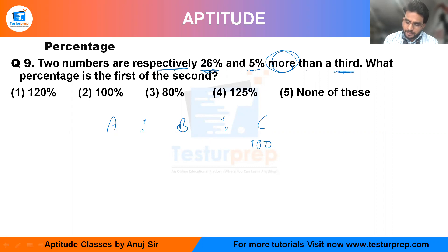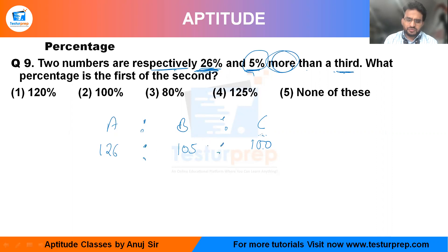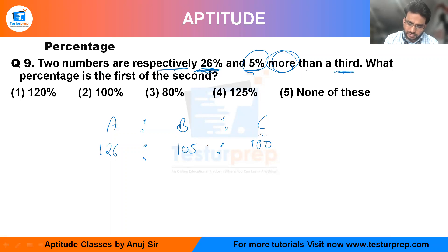Now, the second number is 5 percent more than the third number, so it will be 105. The first number is 26 percent more than the third number, so it will be 126. You can cancel out common factors if there are any among these three numbers, but in this case we proceed as is.